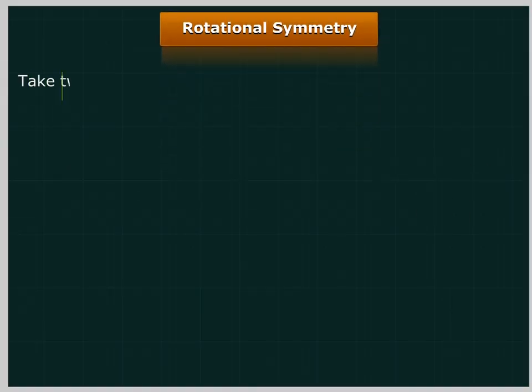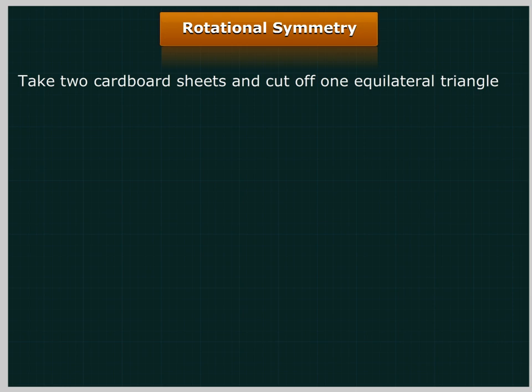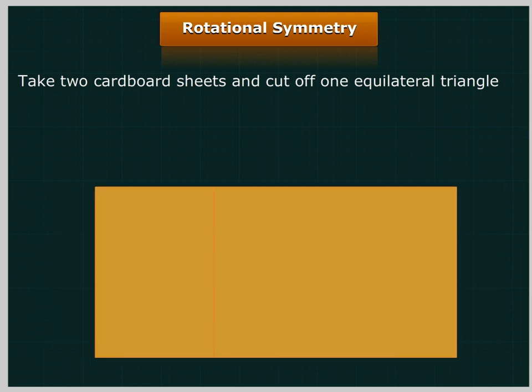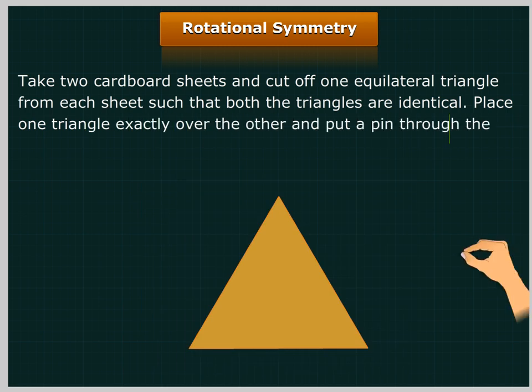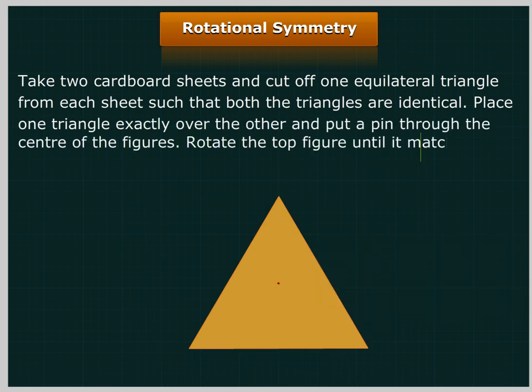Rotational symmetry. Take two cardboard sheets and cut off one equilateral triangle from each sheet such that both the triangles are identical. Place one triangle exactly over the other and put a pin through the center of the figures.